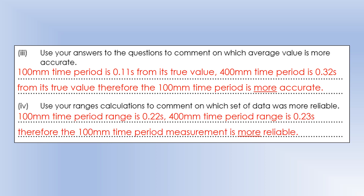In terms of reliability, we look at the range. The 100 millimeter time period had a range of 0.22 and the 400 millimeter had a range of 0.23, so the 100 millimeter time period is slightly more reliable — but basically their reliability is pretty much the same. That concludes this video looking at ranges, averages and uncertainty, and how we can use them to comment on accuracy and reliability.